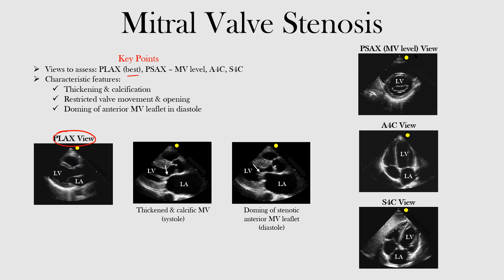That thickening and calcification may appear brighter or whiter because as you have thickening, you also have more reflected ultrasound waves — similar to what you see with the pericardium, which appears nice and bright. You'll also see restricted valve movement and opening because the valve is so thickened and fibrotic. You may also see something called anterior mitral valve leaflet doming, which you can observe in diastole because the valve cannot open normally.